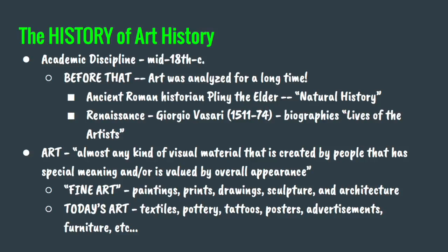Now let's move on to the definition of art. Modern-day art historians define art as almost any kind of visual material that is created by people that has special meaning and/or is valued by overall appearance. There are two kinds of art: fine art, which includes paintings, prints, drawings, sculptures, and architecture; and today's art, which might be textiles like rugs and carpet, quilts, pottery, ceramic art, tattoos, posters, advertisements, furniture, film — any kind of medium that portrays a story through visual means.